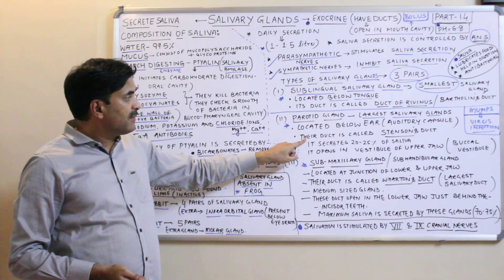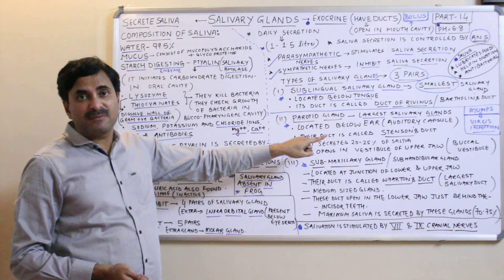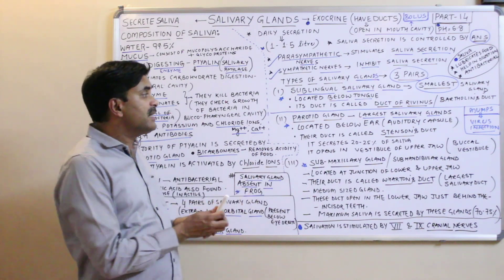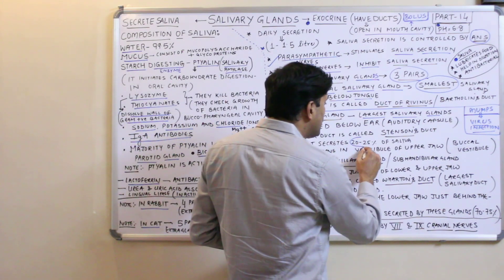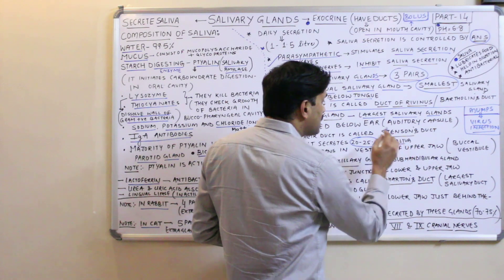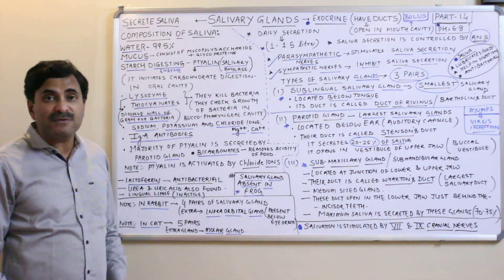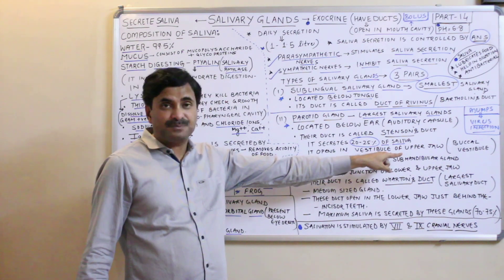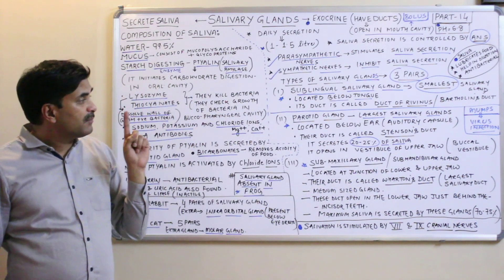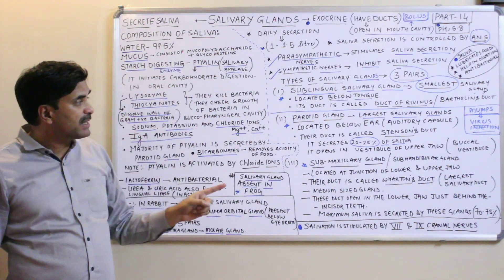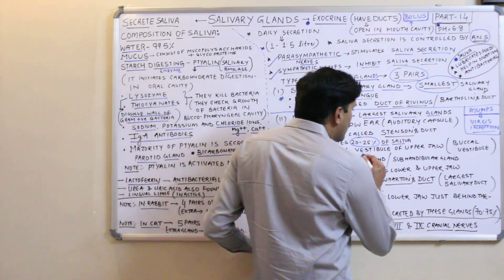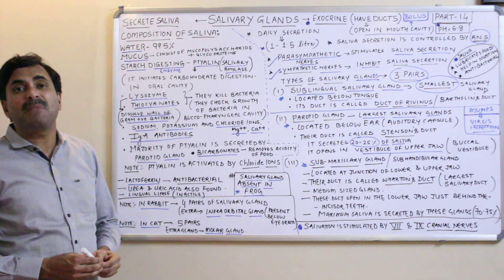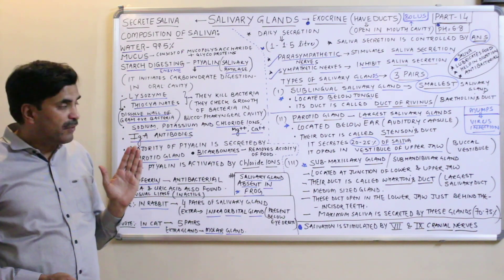The parotid glands are located below the ear. Their duct is called Stensen's duct. They are exocrine, so their duct is called Stensen's duct. The parotid gland secretes 20 to 25 percent of the saliva, and the Stensen's duct opens in the vestibule of the upper jaw — in the buccal vestibule.